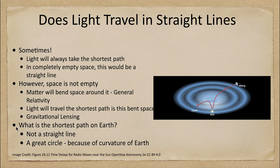Does light travel in a straight line? Well, the answer is sometimes, although really almost never. What light does is light will always take the shortest path between two objects. Technically, in completely empty space, far away from any sources of gravity, yes, that would be a straight line.